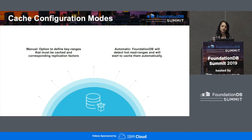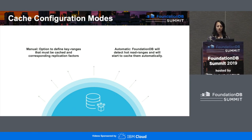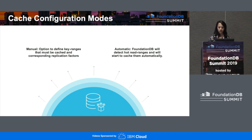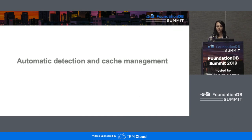Moving on to cache configuration modes: first, we'll have a manual mode where the application can define which key ranges must be cached and a corresponding replication factor. In addition, we'll have an automatic mode where FoundationDB will detect hot key ranges automatically and start caching them. You might ask why we care about manual mode if we have automatic detection. Manual mode gives flexibility — there might be key ranges you want low latency for that aren't actually hot, so automatic detection won't cache them. Manual mode lets applications cache any key range they want.